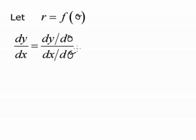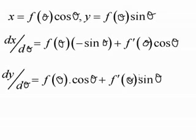Now if we have a function r is a function of theta, then dy dx can be found using the chain rule as dy d theta over dx d theta. So since x is f of theta cosine theta, and y is f of theta sine theta,